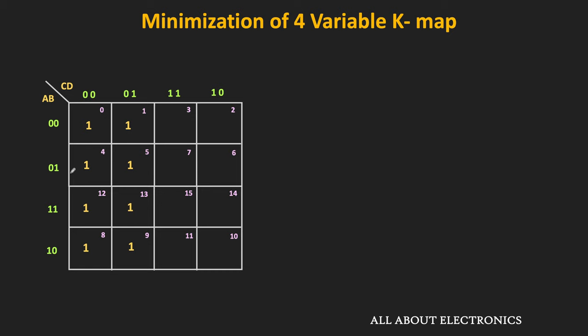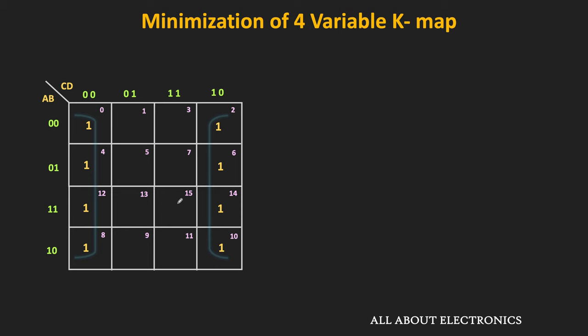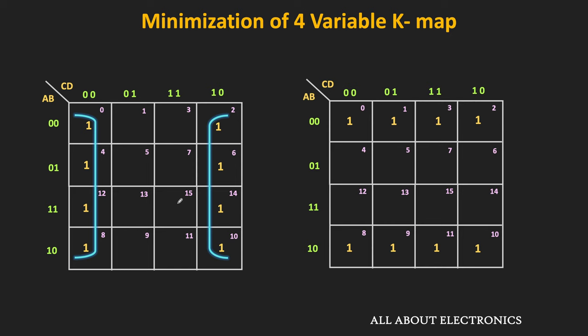Now let us see some possible ways to make a group of 8 ones. The 4 ones in columns 1 and 2 are adjacent, so we can make a group of 8. Similarly, the 4 ones in the second and third rows can be combined into a group of 8. Since the first and last columns are also adjacent, we can combine those ones into a group of 8. Likewise, we can combine the 4 ones of the first and last rows into a group of 8.